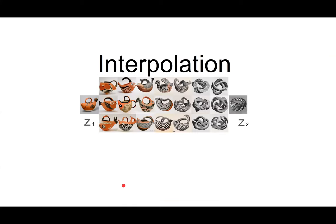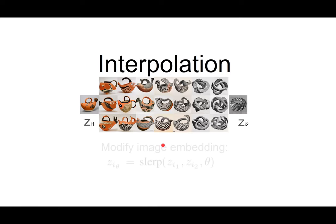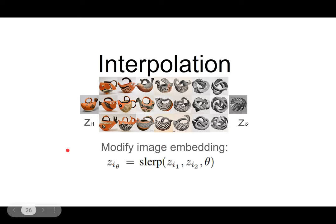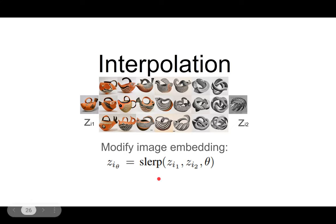Next, I'll talk about interpolation between two images. As you can see, with an image on the left and an image on the right, the interpolation fuses the two images together. To do that, we modify the image embedding by passing the embeddings of both images into the SLERP algorithm, which is spherical interpolation.